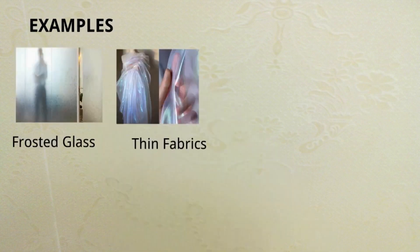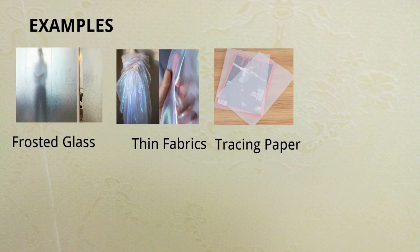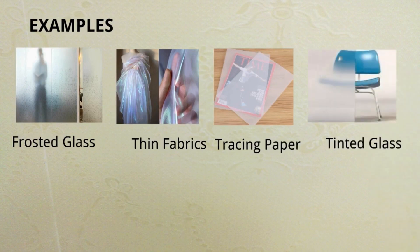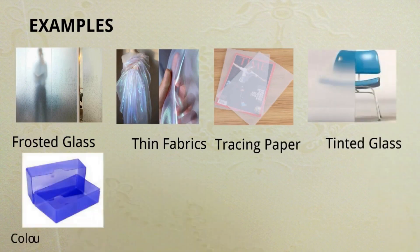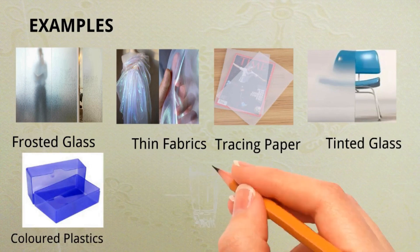Examples of translucent objects include: frosted glass, thin fabrics, tracing paper, tinted glass, colored plastics, and clouds.